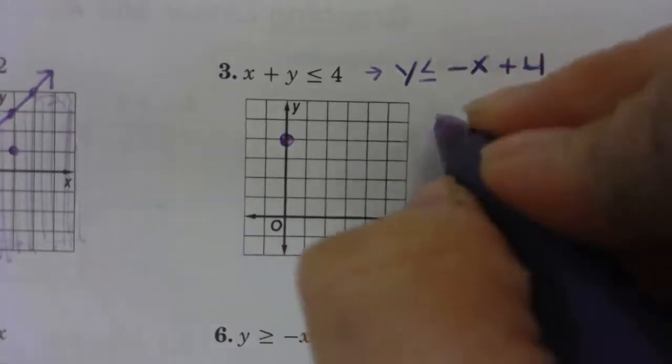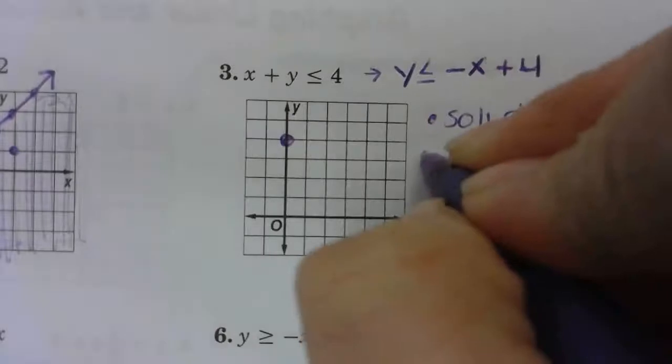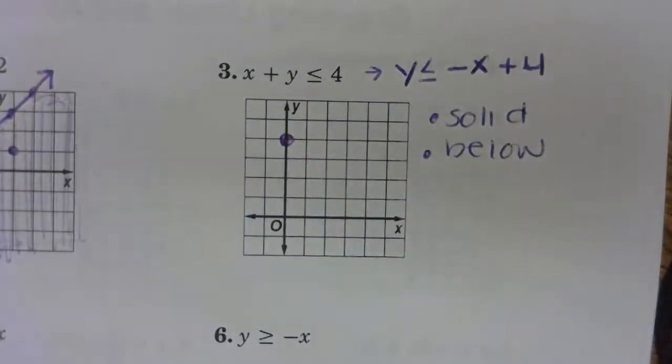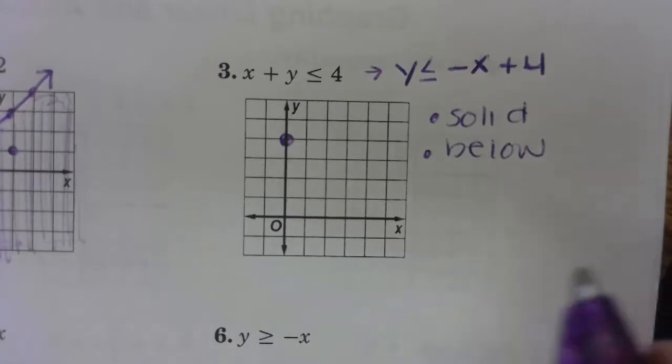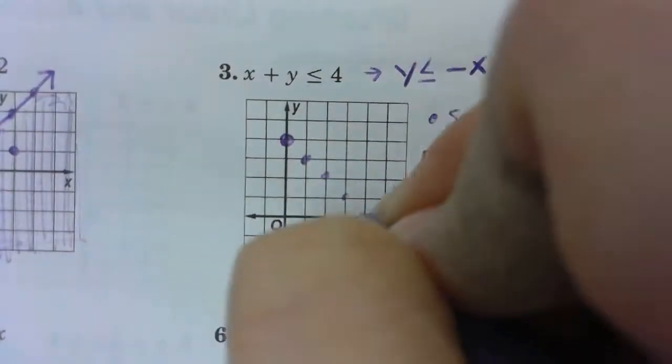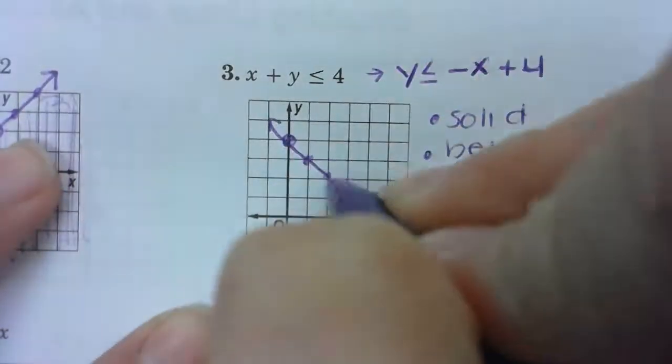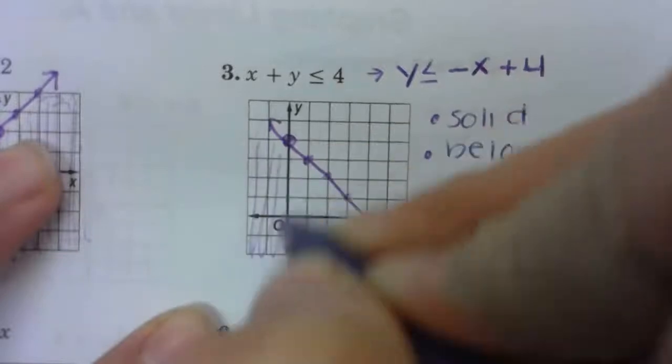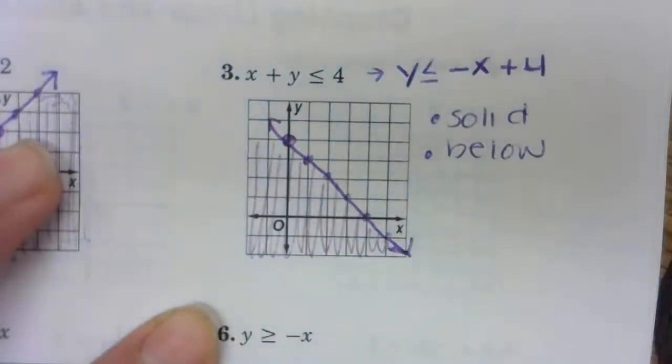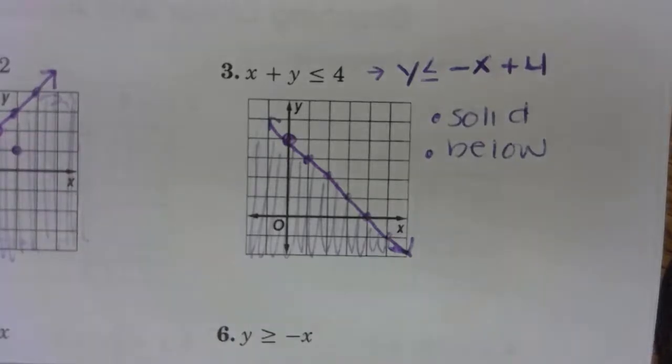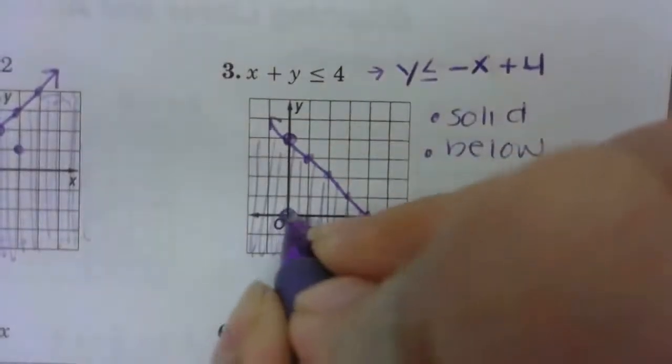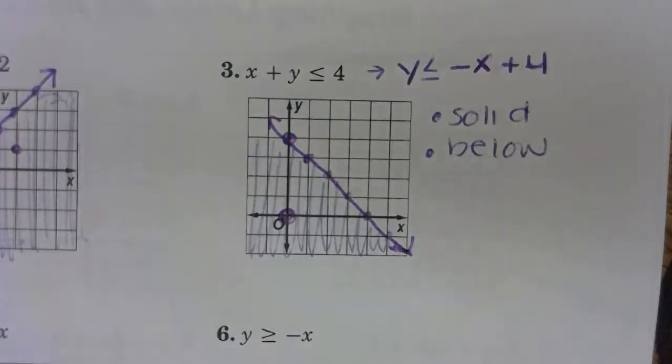Van, is my line solid or dashed? Solid. Good. Okay. Leanna, am I going to shade above or below? Awesome. And then Faith, what is the slope of that line? Good. My slope is negative one. So we're going to go down one, right one. Down one, right one. So as Van told us, my line is solid. And as Leanna said, it is below. Okay. Lauren, give me a point that is a solution. Awesome. Zero, zero is in my shaded region. Therefore, zero, zero is a solution.